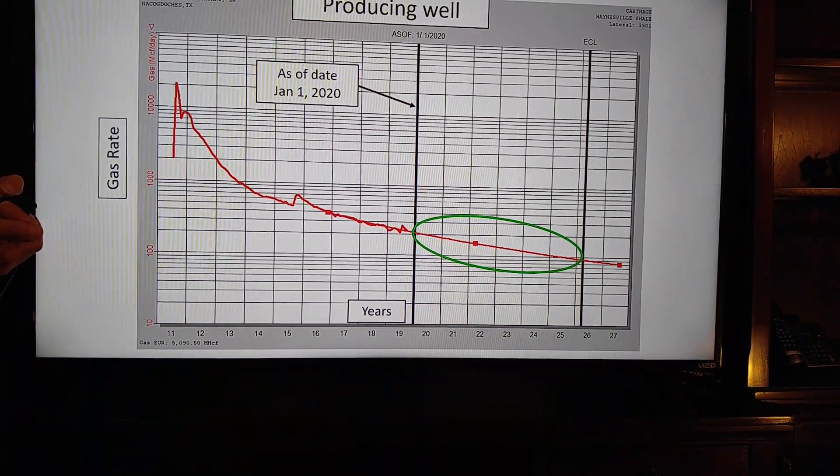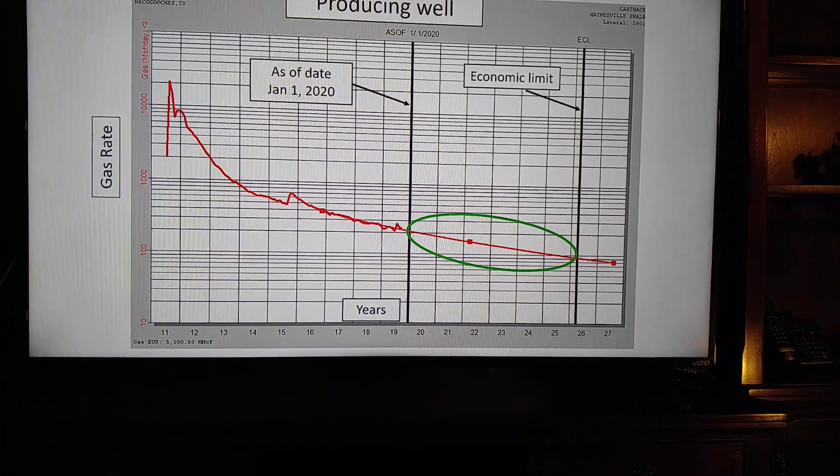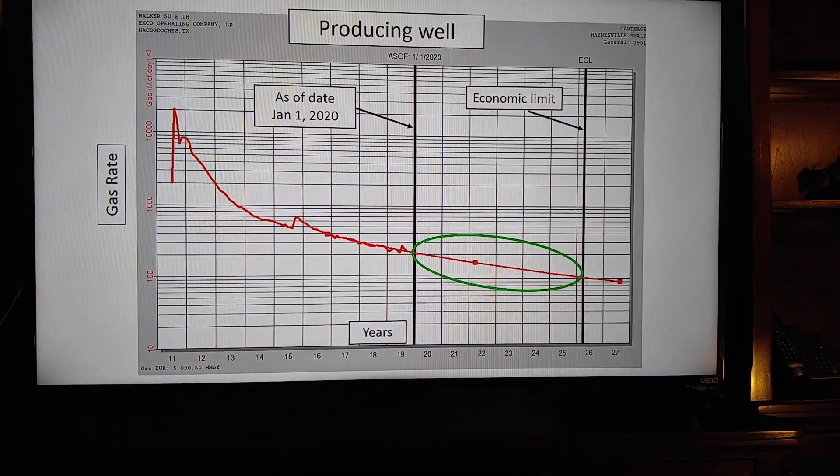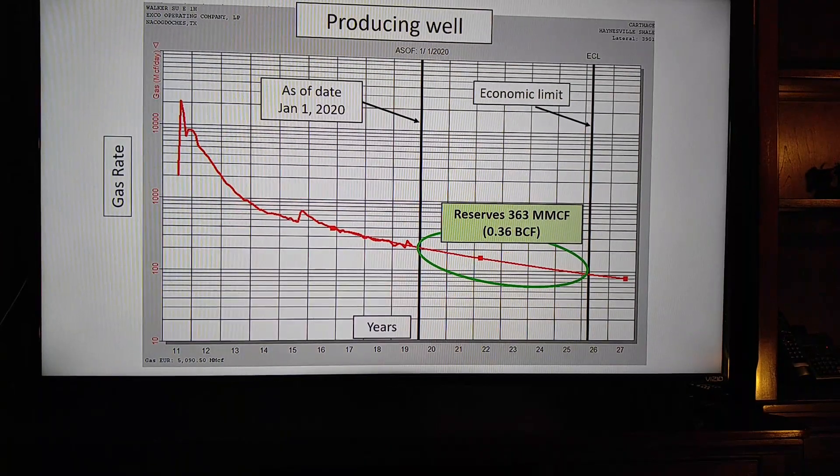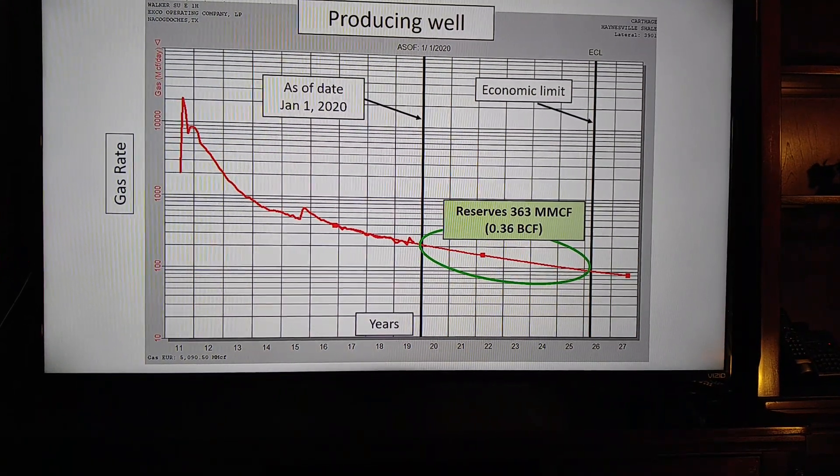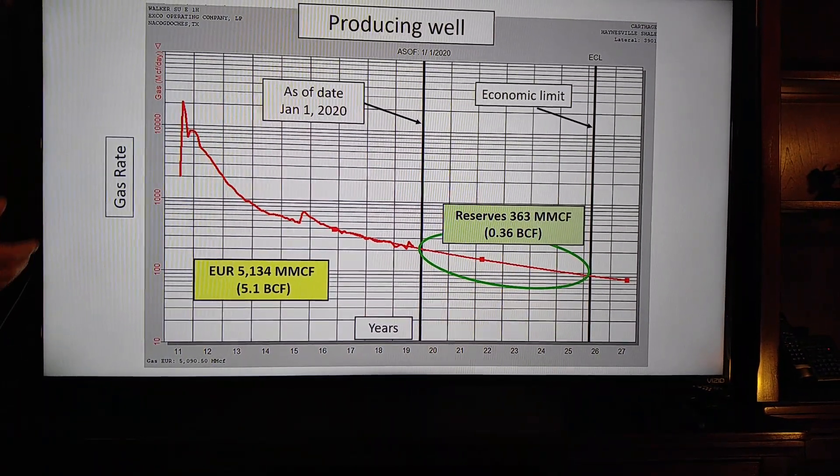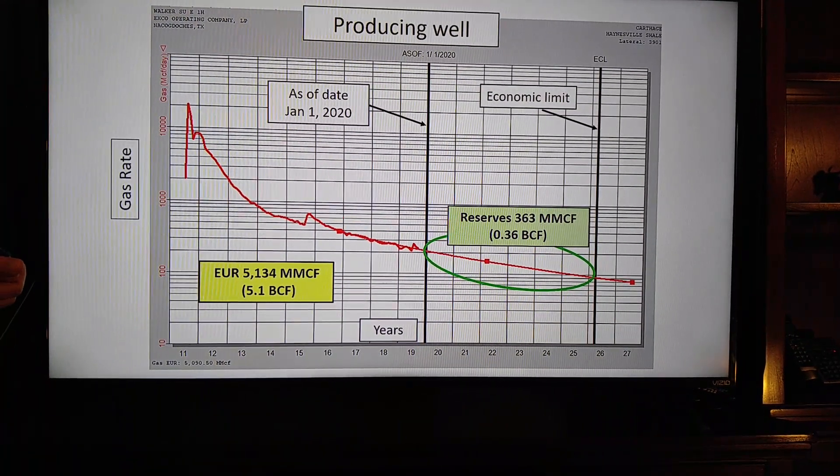The reserves for the well are in this green area, and the economic limit is the other black line, because once the well reaches the economic limit, there are no more reserves. So in this case, the well has about 0.36 BCF of reserves. But over its life, its EUR is 5.1 BCF. So they're going to be different. The reserves and the EUR are different. That's a producing well example.